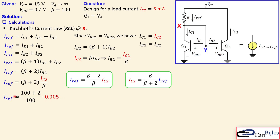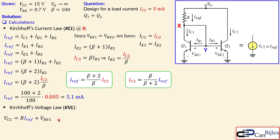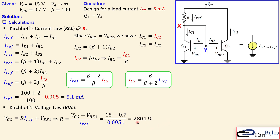Moving on and calculating the required IRF: we know beta is 100, we have the (β+2) term, and we require IC2 equals five milliamps. Doing the calculation gives IRF equals 5.1 milliamps. For the next step, we calculate resistor R using KVL from VCC to ground: VCC equals R times IRF plus VBE1. Rearranging for R: R equals (VCC minus VBE1) divided by IRF. Substituting the values — (15 minus 0.7) divided by 0.0051 — gives R equals 2804 ohms.